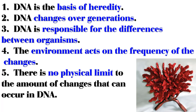I propose the following list of points that are the basis of evolutionary theory. This is my own understanding and it probably is far from complete, but it might give people some frame of reference about where they disagree. Each of these points is supported by controlled, experimental evidence in peer-reviewed scientific papers. 1. DNA is the basis of heredity. 2. DNA changes over generations. 3. DNA is responsible for the differences between organisms. 4. The environment acts on the frequency of the changes. 5. There is no physical limit to the amount of changes that can occur in DNA.